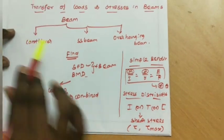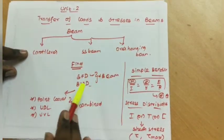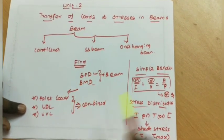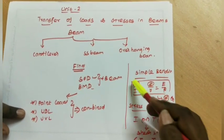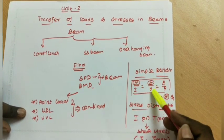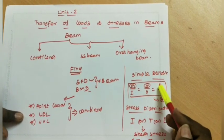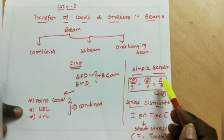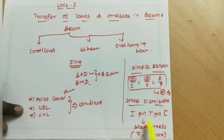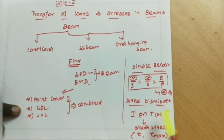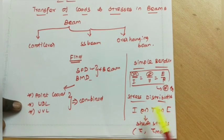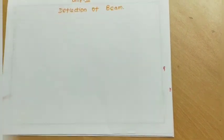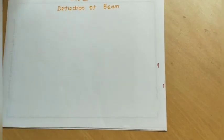There are three types: cantilever, simply supported beam, and combined loading. The simple bending equation is M/I = σ/y = E/R. Using this equation, we find M, sigma, or R. The last topic is shear stresses for I6 and T6 cross-section dimensions, and we can see the shear stress distribution (CSS).